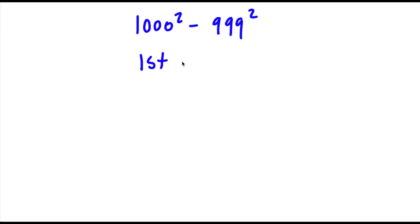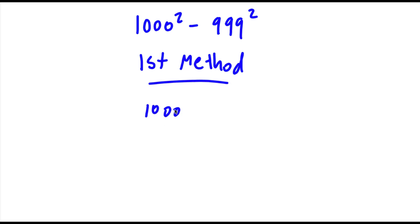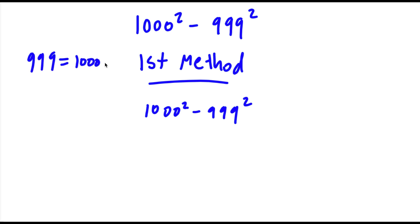So the first method: we start with 1000 squared minus 999 squared. Now 999 is the same thing as 1000 minus 1. So now I'm going to replace 999 with 1000 minus 1.